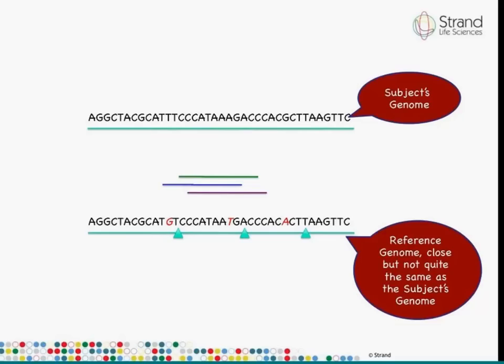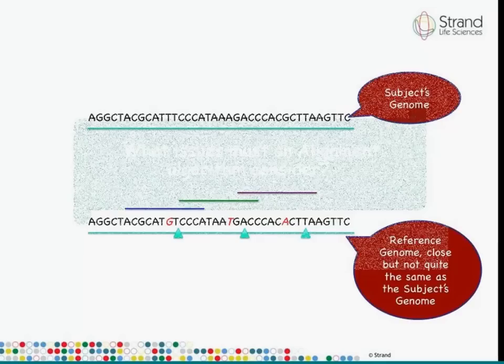You use the reference sequence to map these reads back, which tells you where they potentially came from in the subject's genome. Note that the reference genome is not quite the same as the subject genome, but it's close enough. It has a few mismatches, deletions, and insertions — shown in red — which is what makes the problem of alignment a little more tricky. So the problem is to take reads from one genome and map them to a relatively similar genome.